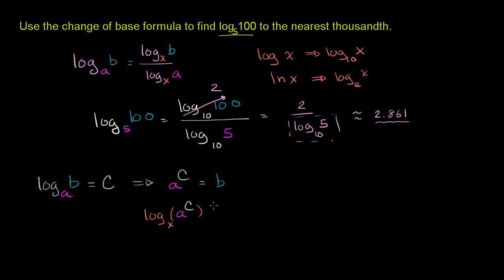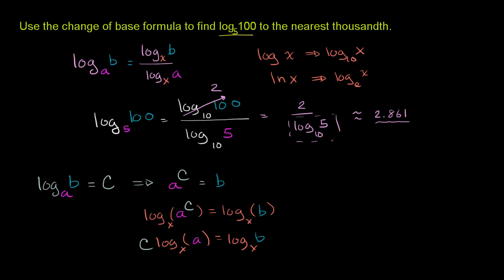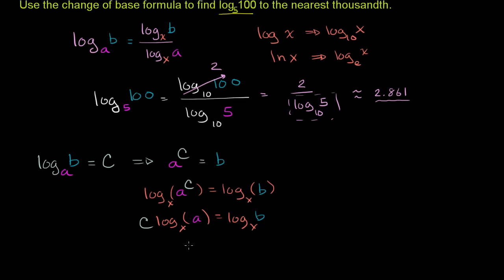So log base x of a to the c equals log base x of b. From our logarithm properties, log of a to the c is the same as c times log base x of a, and that equals log base x of b. If we solve for c by dividing both sides by log base x of a, we get c equals log base x of b over log base x of a.